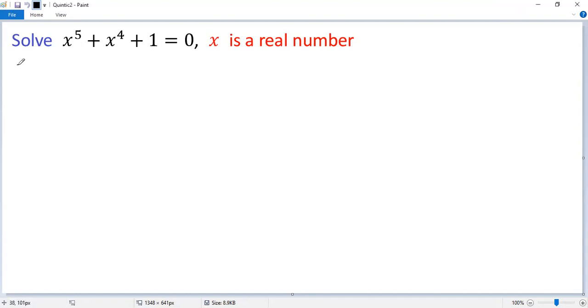So x to the power 5 plus x to the power 4, here we play a trick, plus x cubed minus x cubed, then plus 1 equals 0.